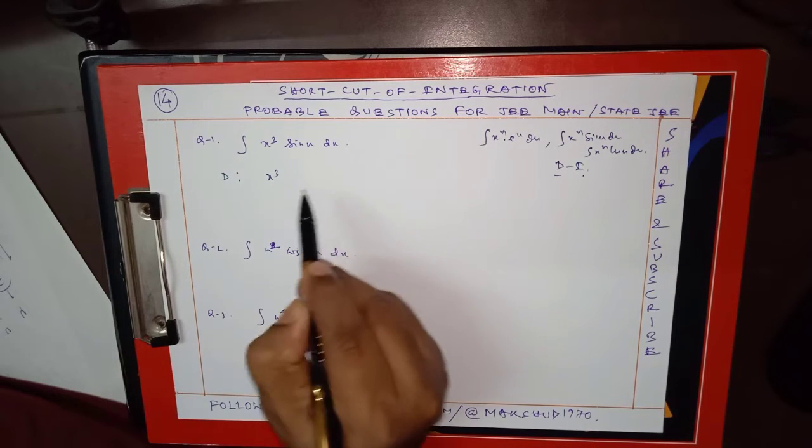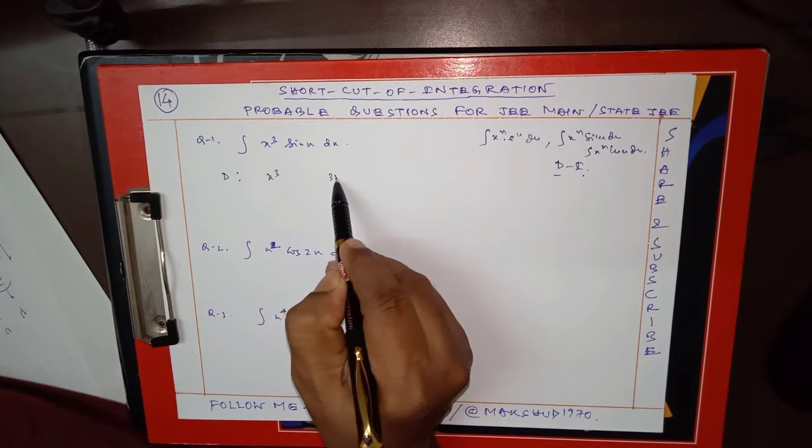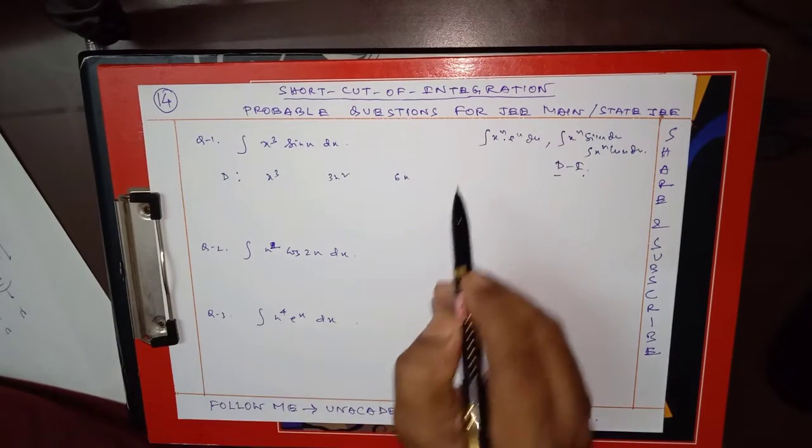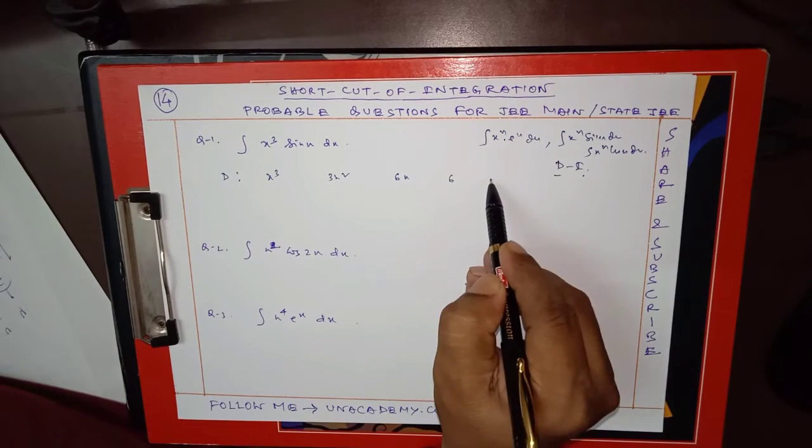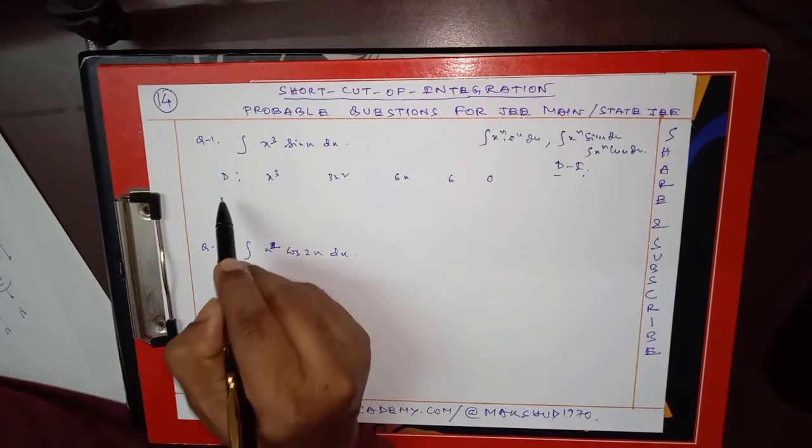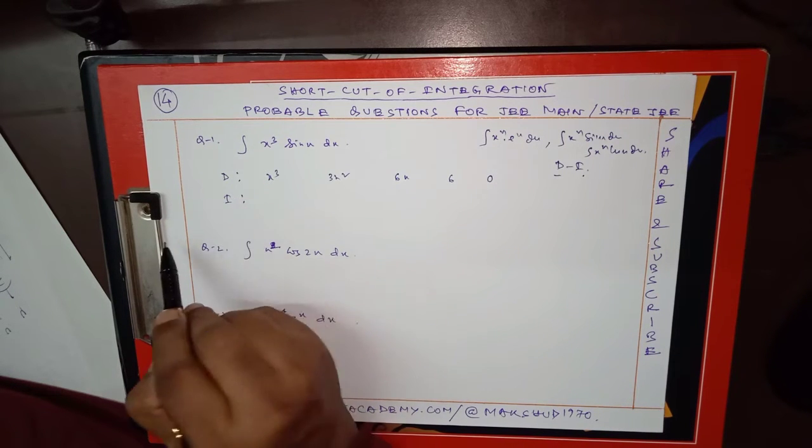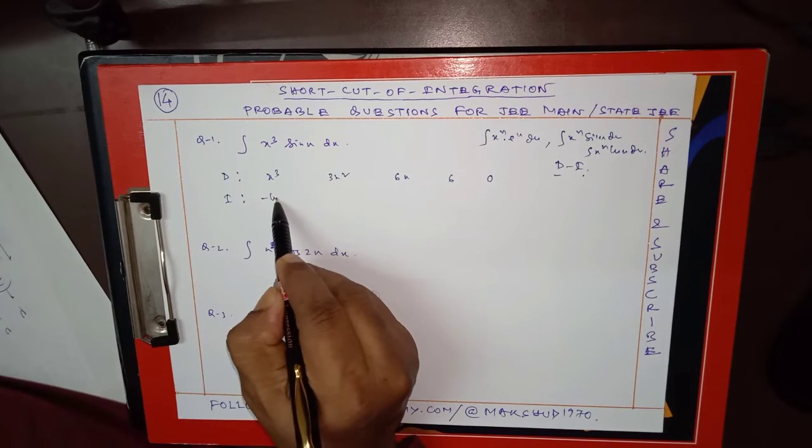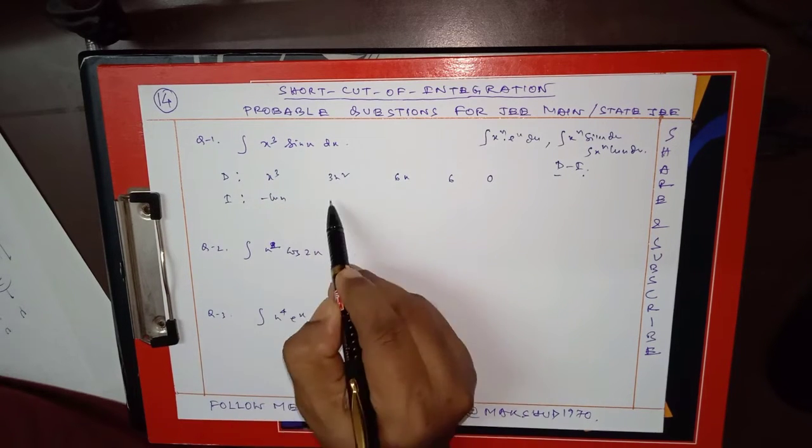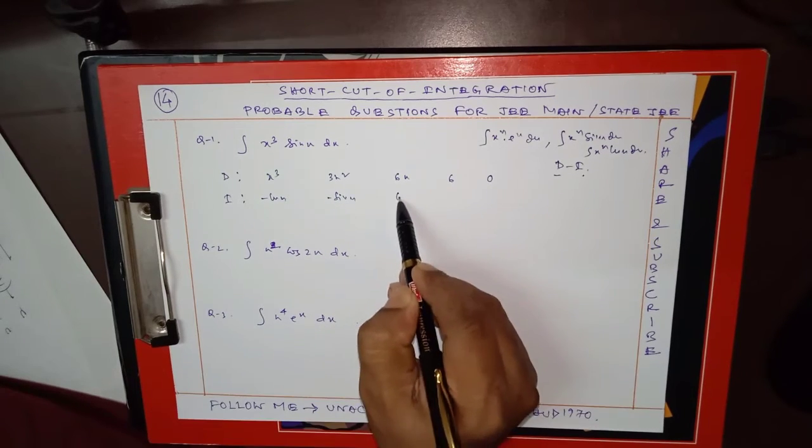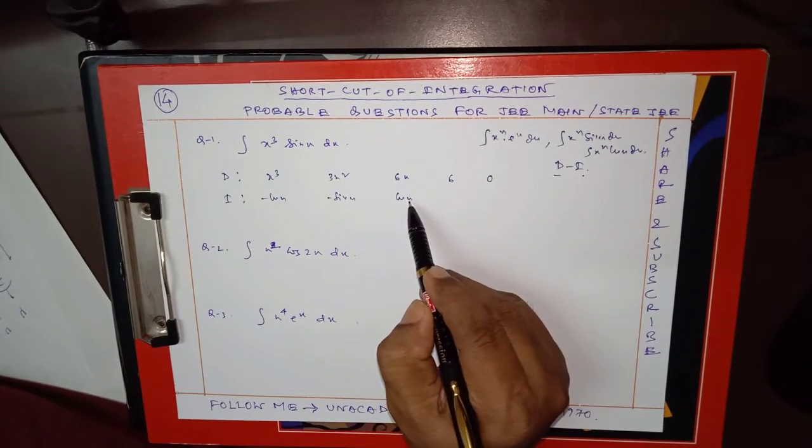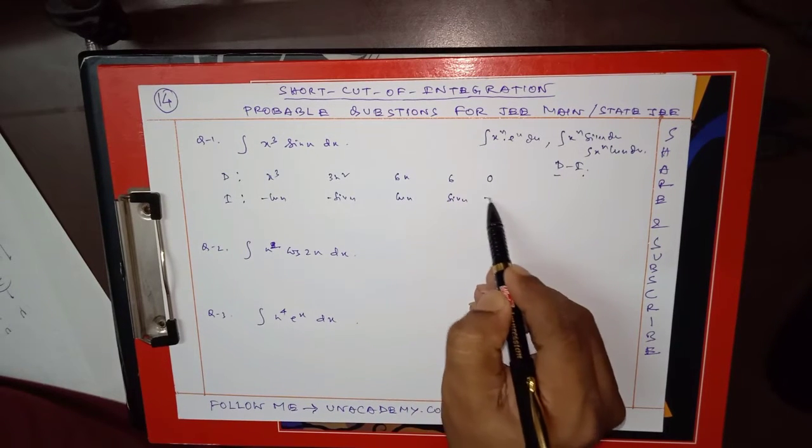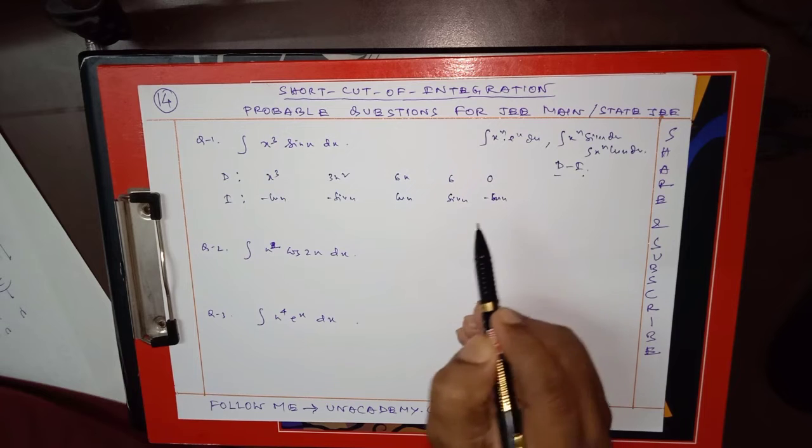So this is x³. Differentiate: 3x². Then differentiate: 6x. Then differentiate: 6. So this is minus cos x, then integrate minus sin x, integrate this is cos x, so integrate this is sin x, minus cos x. Clear.